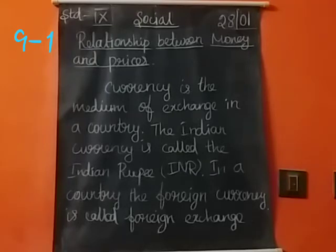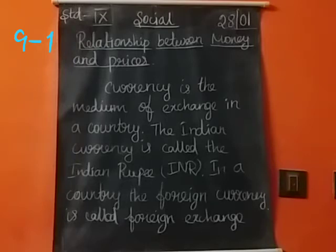There is a close relationship between the volume of circulation of money and the price of things. About 90 percentage of the products are manufactured with the main aim of sales or service. Most of them want to manufacture the product.